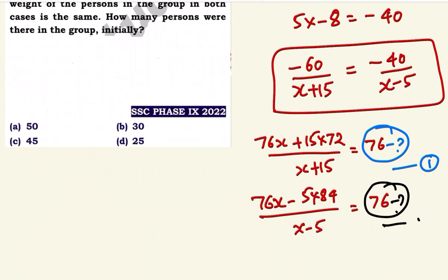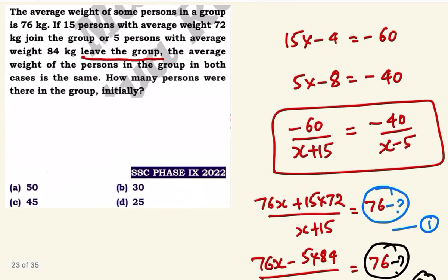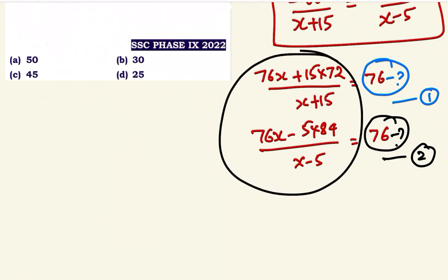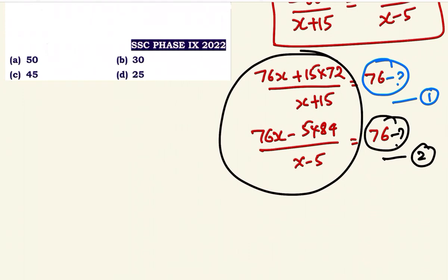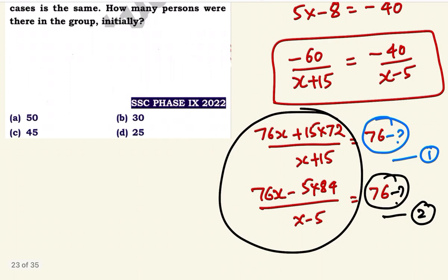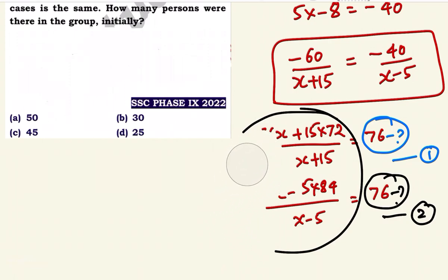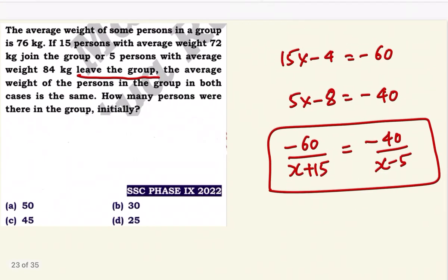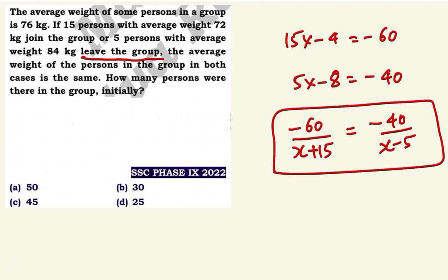This is the second equation. The two are equal. Both cases give the same average, so 76 equals 76. That's why we equate these two equations and find the x value. So we solve: 3x minus 15 is equal to 2x plus 30. Therefore x is equal to 45.